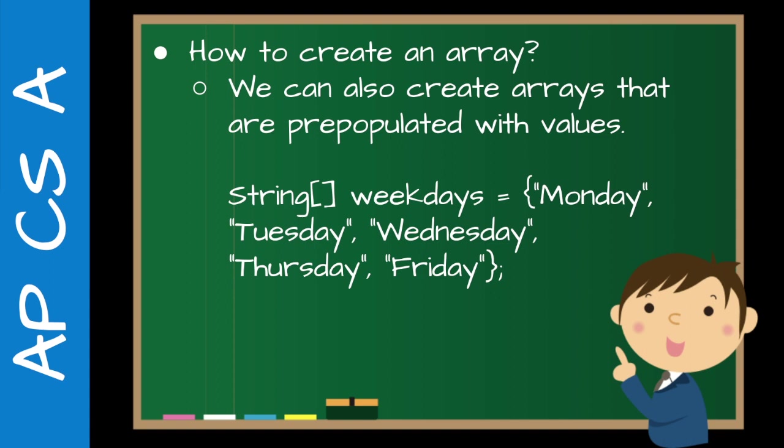We can also create arrays that are pre-populated with values. For example: `String[] weekdays = {"Monday", "Tuesday", "Wednesday", "Thursday", "Friday"}`. You can see there are five elements with indexes zero through four. In this case we know upfront what the values are going to be. We could change those if we wanted to, but this is a way of pre-populating if we know the values in advance.